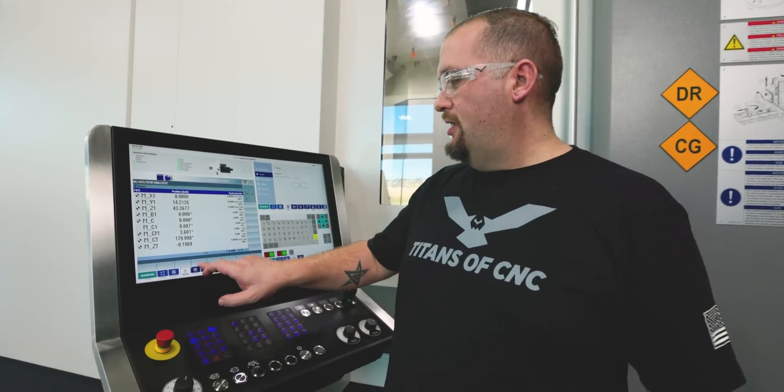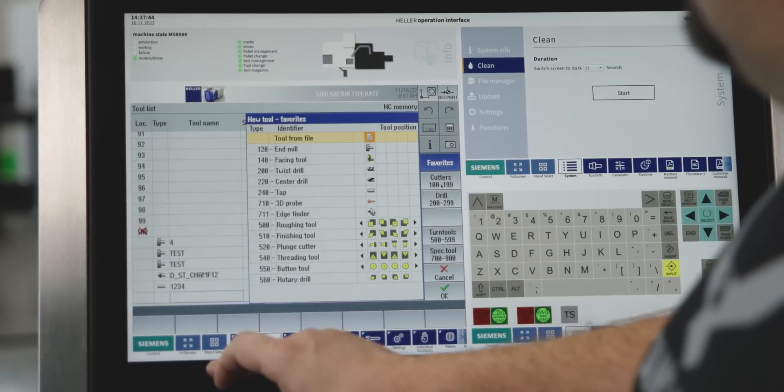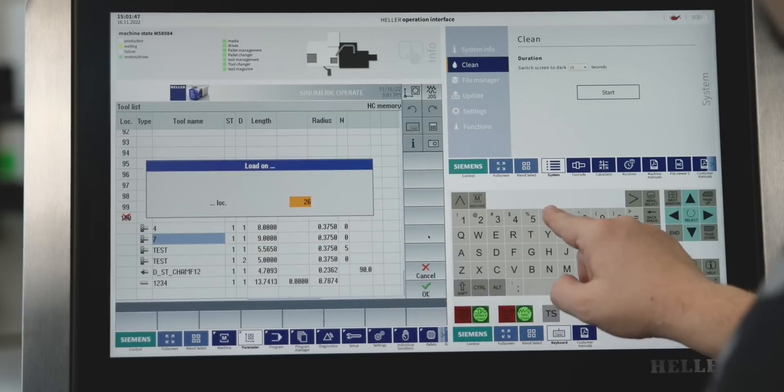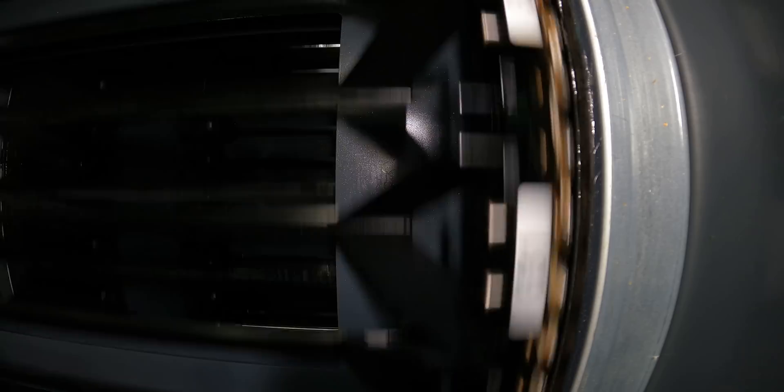All right, so putting in a tool is super easy. We're going to go to our parameter page. We're going to scroll all the way down to the bottom, pick a slot, tell a new tool, pick our tool, tell it to load. It asks what pocket number, let's say 67, say OK, and now our magazine is moving into position.